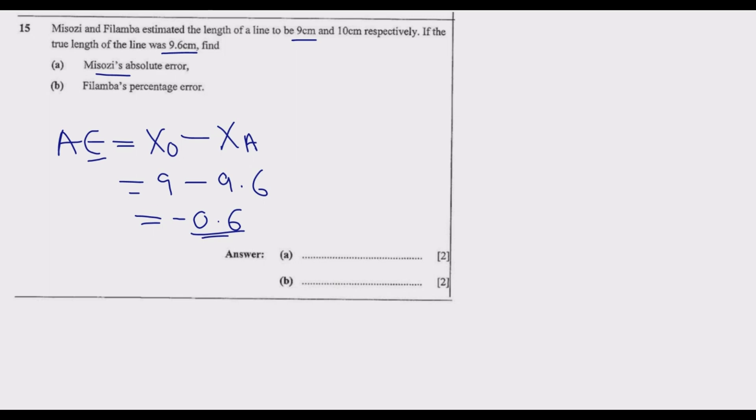This number needs to be given in absolute terms. Absolute means there is no matter whether positive or negative, it has to be positive. So it's 0.6 centimeters. Because it's absolute, it becomes positive. That's part A. Let us go to part B.